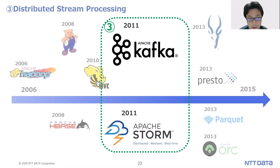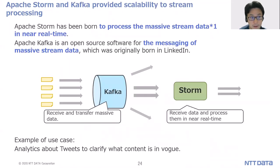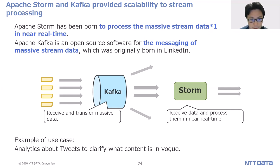The third category is distributed stream processing. Apache Storm and Apache Kafka provide scalability for stream processing. Apache Storm was born to process massive stream data in near real time. Apache Kafka is an open source software for messaging of massive stream data, originally born at LinkedIn. Using Apache Kafka we can receive and transfer massive data frequently, and using Storm we can receive and process data in near real time. One example use case is analytics about tweets to clarify what content is trending.